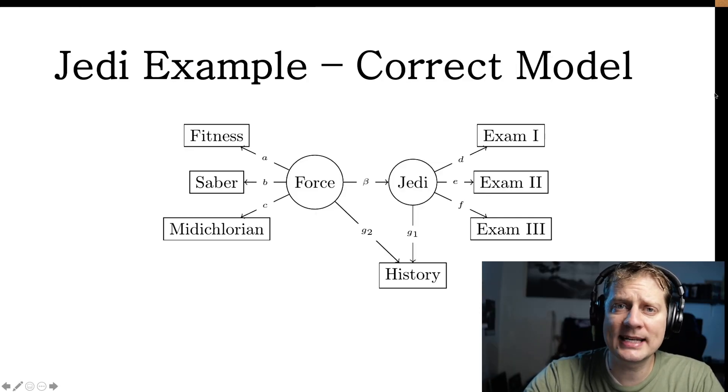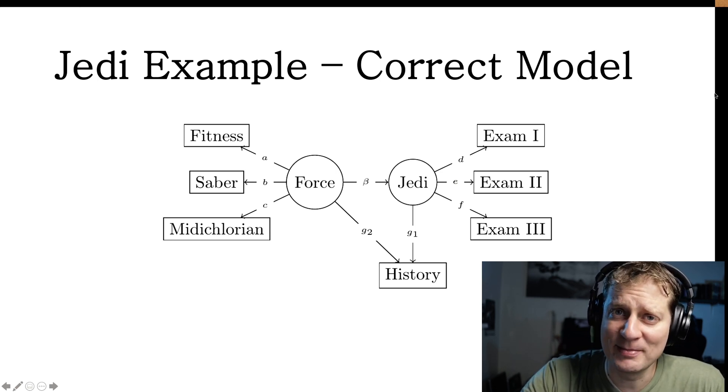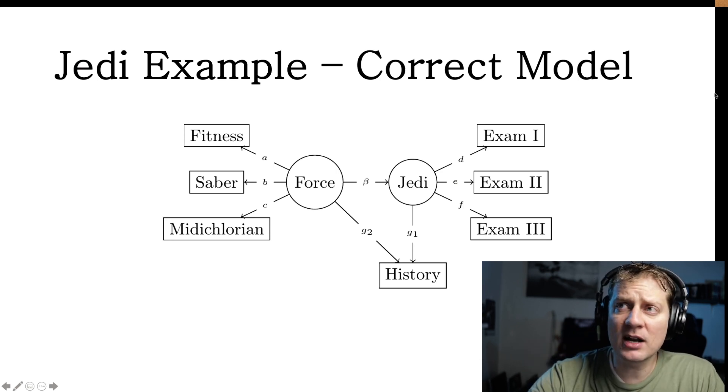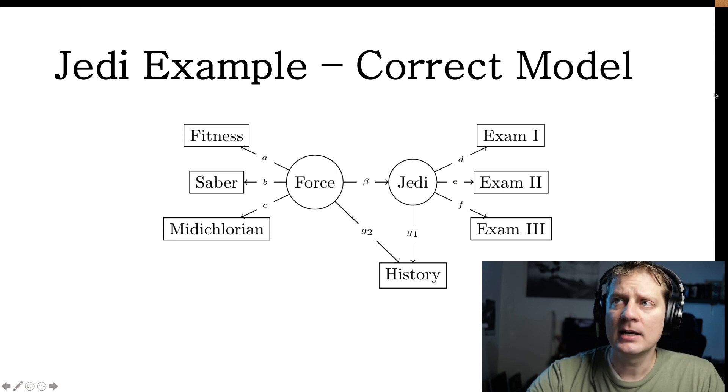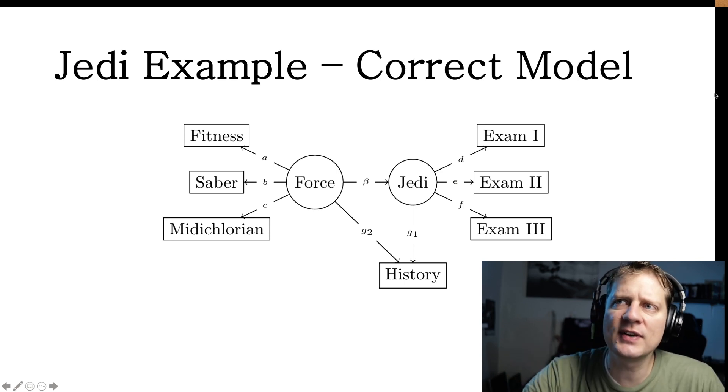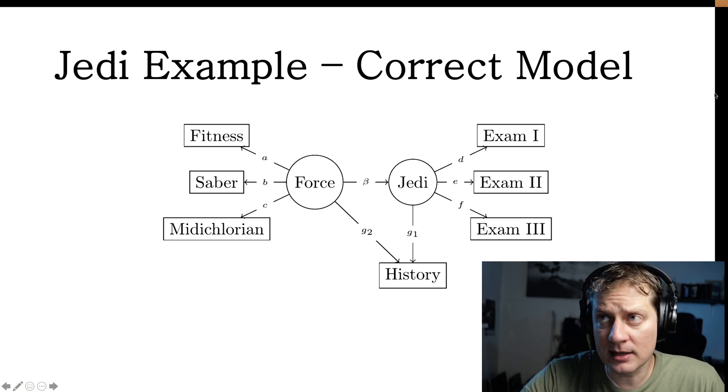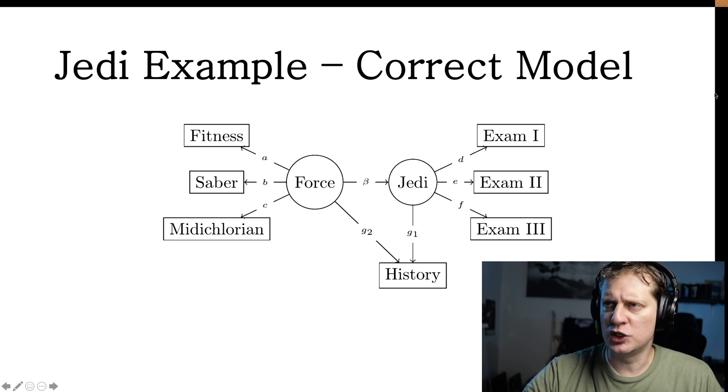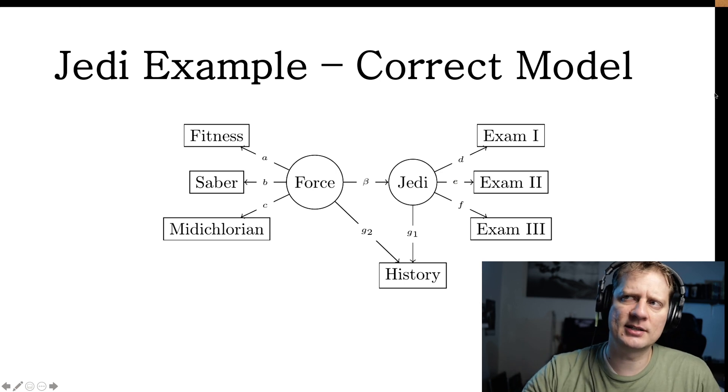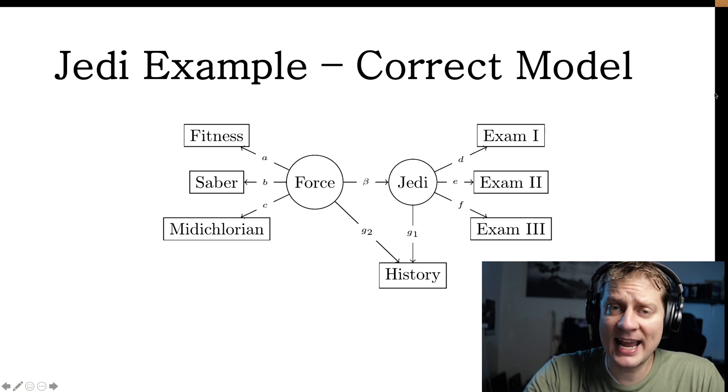So throughout this, I'm going to show you an example to highlight some of the features of FlexPlavon. This is the JEDI dataset. By the way, if you read the paper, I actually use this exact dataset in a scientific publication. Is that not the coolest thing ever? So in this model, we have two latent variables, force and JEDI. Unbeknownst to us, the correct model looks like this. The force variable causes the variables fitness, saber, and midichlorian, as well as partially causing history. The other latent variable JEDI causes one's scores on the JEDI Padawan final examinations that has three exams. I'm totally making this up, by the way.